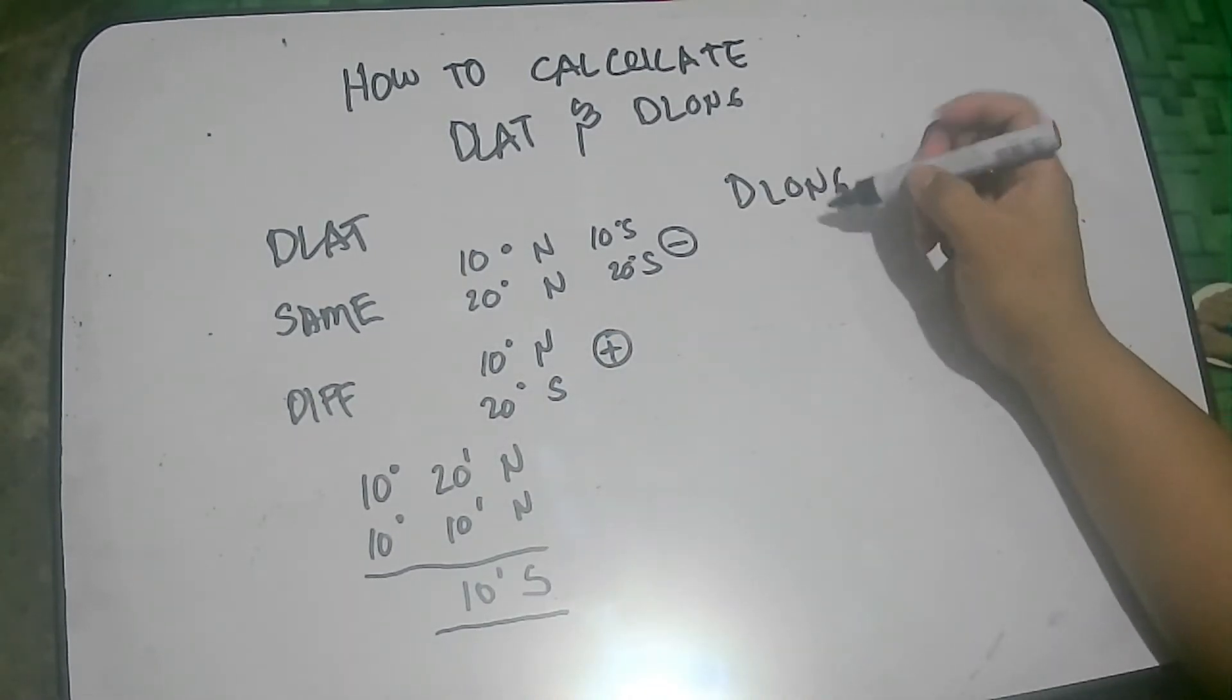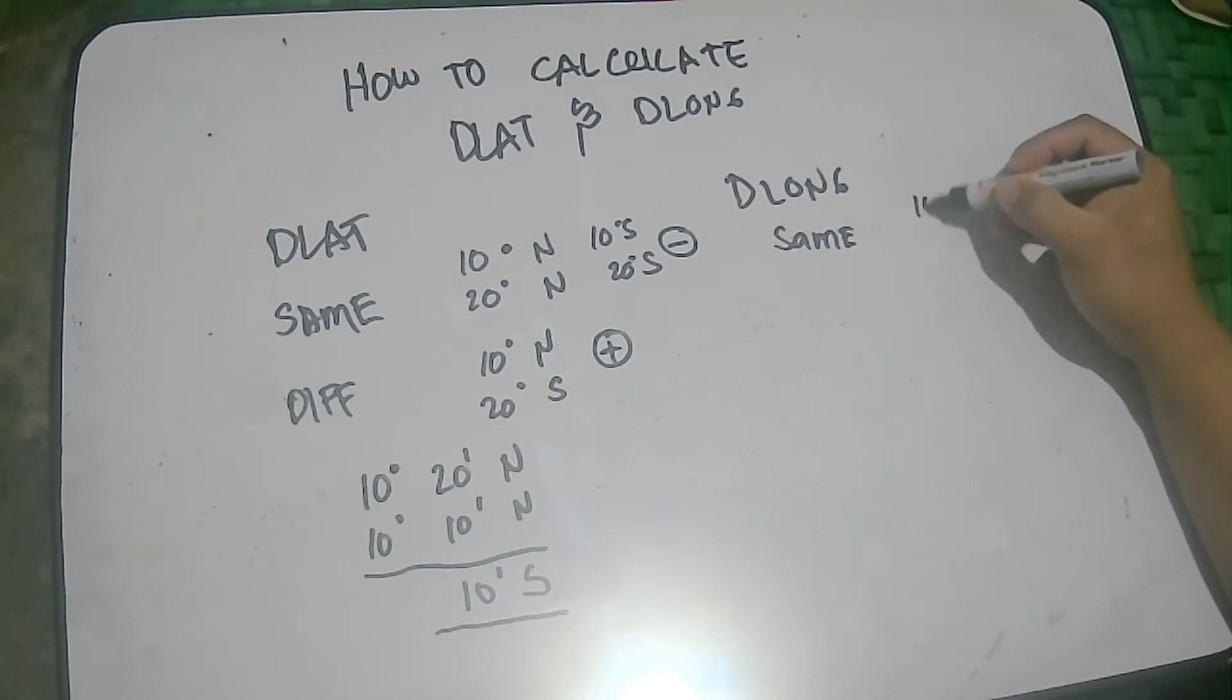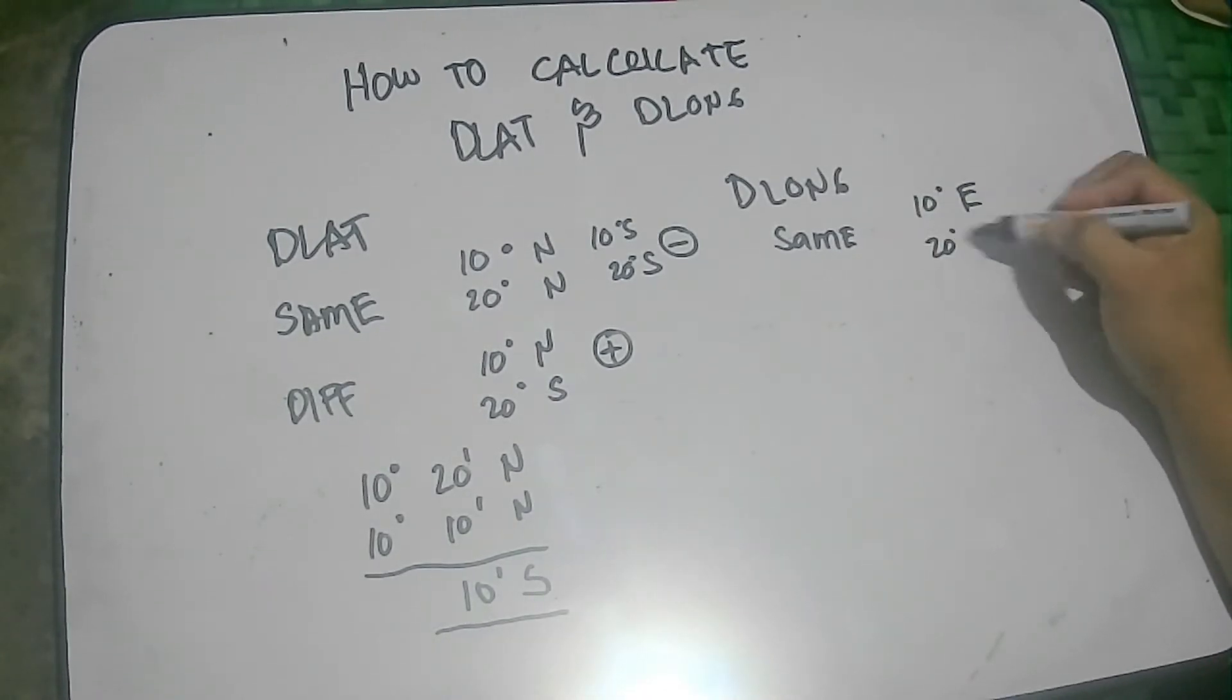And of course, for the Dilong, same thing. Pagka same name, you subtract. For example, 10 degrees east and 20 degrees east. Okay? So, subtract.